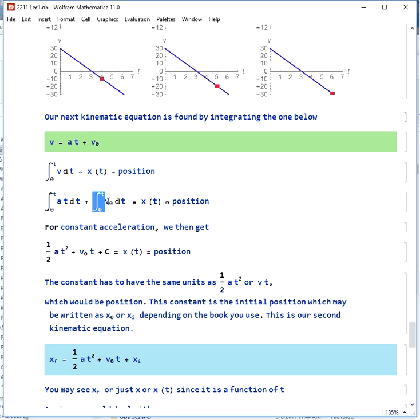If the acceleration is a constant, it comes outside of the integral, and we get one half at squared, then we get v0 times time from this piece, and of course, we get a constant of integration. This has to have the same units of velocity times time or acceleration times time squared, which is position, so that makes sense. This is our initial position, and we can write it as x0 or x initial, again, depending on the notation.